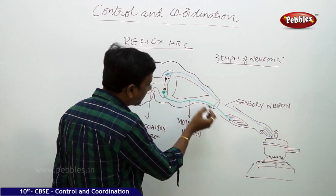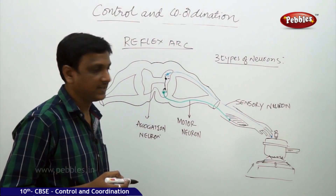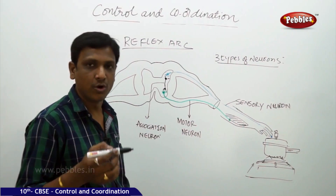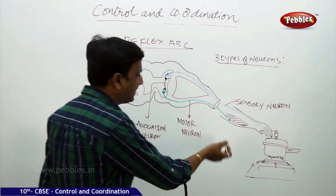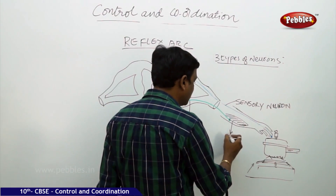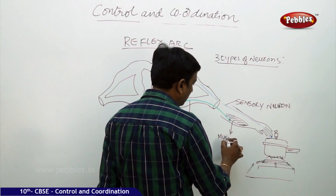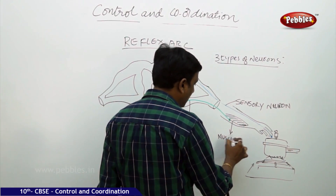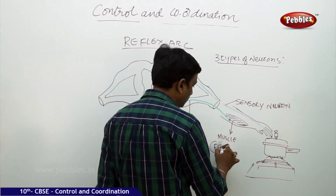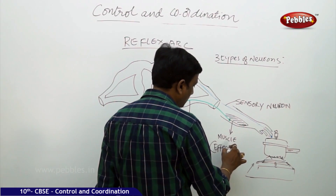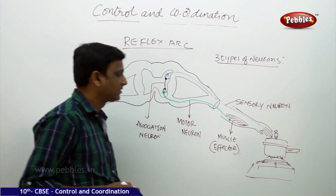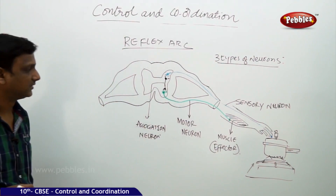The motor neuron carries the information and the decision about what has to be done. Here, the muscle in the hand contracts, and by that the hand rises up. So this muscle in the hand is called the effector — that means it is affected by this decision.